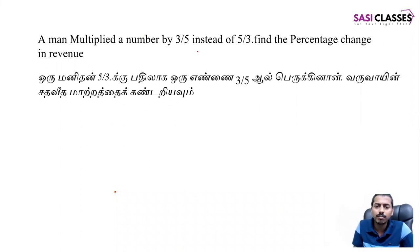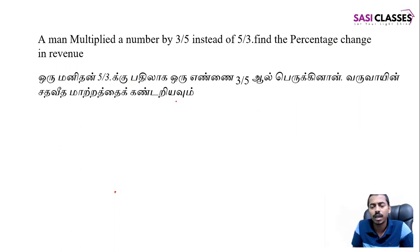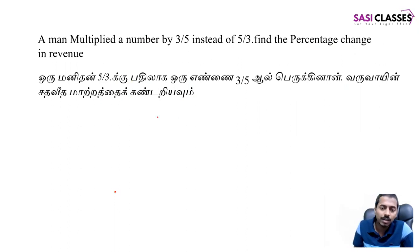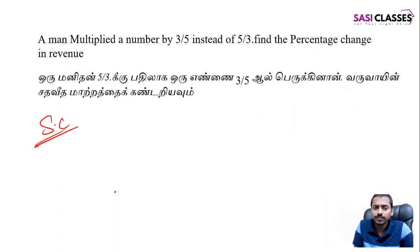A man multiplied a number by 3/5 instead of 5/3 — find the percentage change in the result. If you look at the number 5/3, you will get 3/5. If you look at the actual method — the X method — I will go to the shortcut. Here we are going to make the first step: the man multiplied the number by 5/3 instead of 3/5.